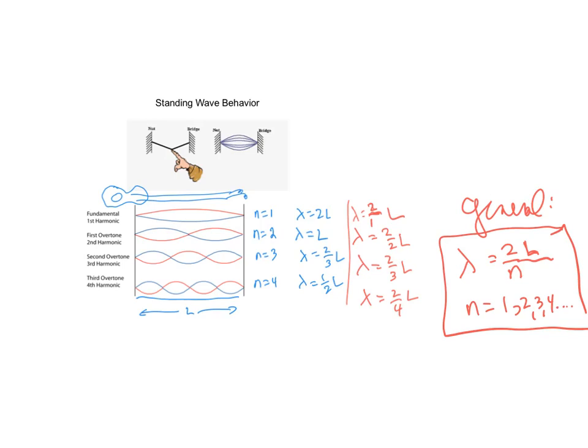This is an example of a quantized system — quantum mechanics. Quanta means particles or packages of energy. There are quantum numbers associated with these standing waves: N equals one, two, three — an example of a quantized system. The wavelength for the standing wave can only take specific values, nothing in between. Like stairs — you can step to the first, second, third, or fourth stair, but there's no half-stair. It's just bundles or packages; that's a quantized system.